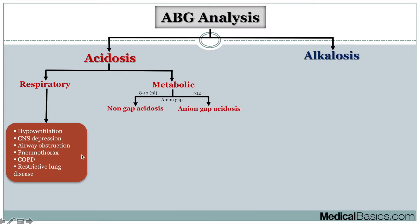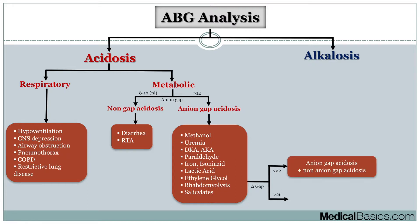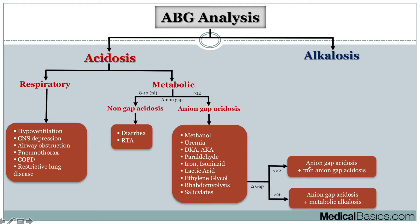Next is metabolic acidosis. Once you've determined it's a metabolic acidosis, you want to calculate an anion gap. If the anion gap is normal, think about diarrhea or renal tubular acidosis. If it's high, that's where the MUDPILE mnemonic applies. After confirming an anion gap acidosis, you want to assess the delta gap — calculated as the patient's anion gap minus the normal anion gap (around 8–12), then adding that to the bicarb. If the delta gap is low, there's an additional non-anion gap acidosis. If it's high, there's also a concurrent metabolic alkalosis.